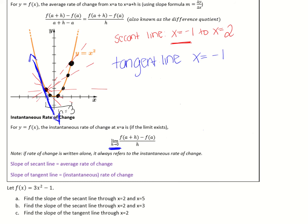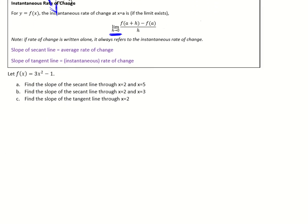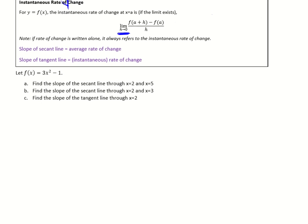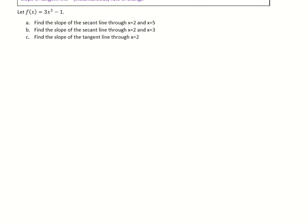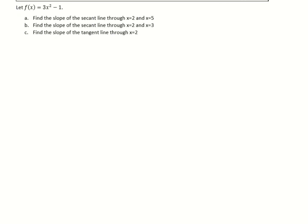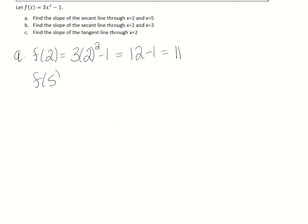Understanding this is the basic concept of calculus and will take you very far. Let's do a problem with f(x) = 3x² - 1. First, find the slope of the secant line through x = 2 and x = 5. We need f(2): 3 times 4 minus 1 equals 11. And f(5): 3 times 25 minus 1 equals 74.